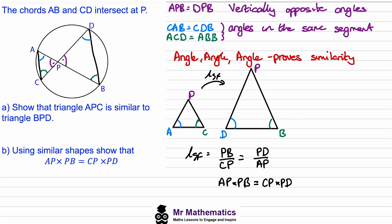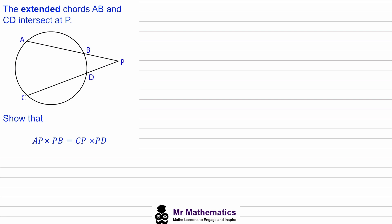Okay, let's look at our second example. In this example, we've been told that the extended chords AB and CD—so A to B here and C to D here—intersect at point P, which is this point here. We've been asked to show the same property, so perhaps you want to try this